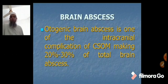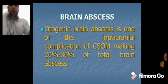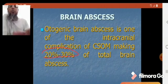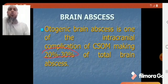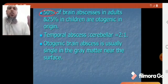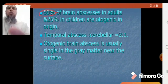Otogenic brain abscess is one of the intracranial complications of chronic suppurative otitis media, making up 20 to 30 percent of the total brain abscess. Brain abscess usually occurs in adults in 50 percent of cases of otogenic brain abscess, and 25 percent of brain abscess cases in children.